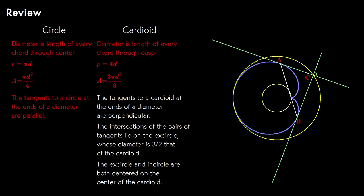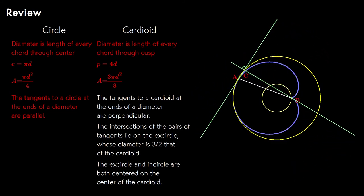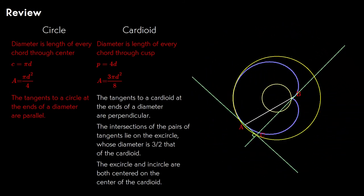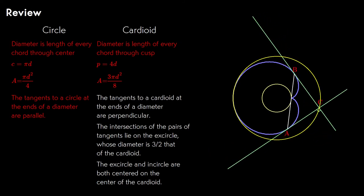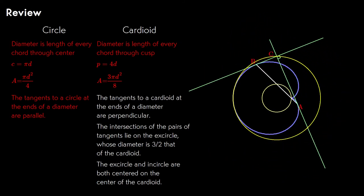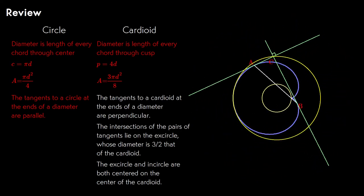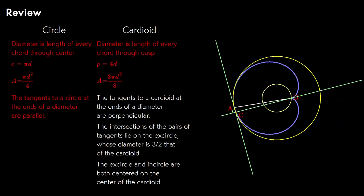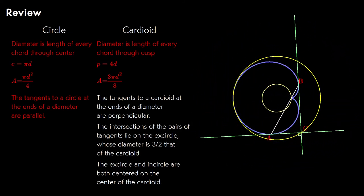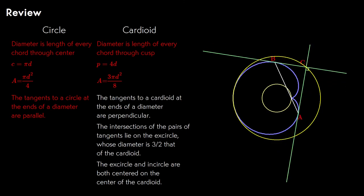So to review, we've learned a few new things about the cardioid. The tangent lines to the cardioid at the endpoints of any diameter are perpendicular. The perpendicular pairs of tangents intersect at points on a circle called the x-circle, which is three times the diameter of the in-circle and concentric with it. And we've had some practice in using Weierstrass substitution, which is the Swiss Army knife of trigonometric substitutions.